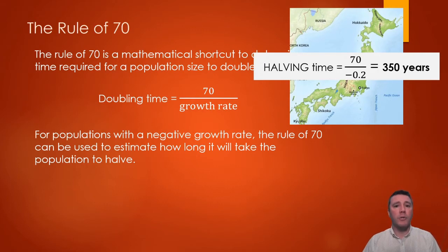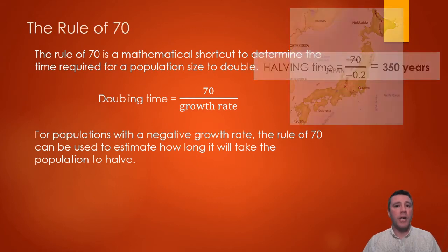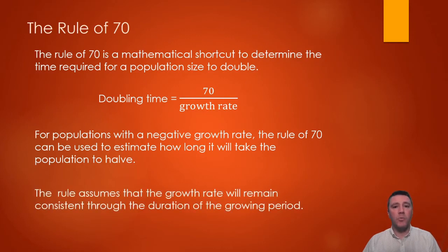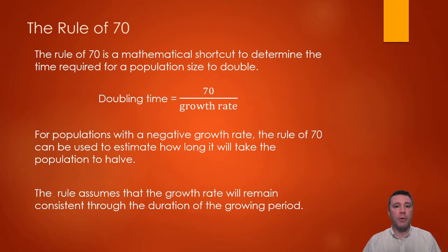Having provided all of those examples, here is one critically important factor to remember: those estimates will only come to pass if the growth rate remains the same over that period of time. A population whose growth rate increases will have a shorter doubling time, and if growth rate decreases, it will take longer for the population to double.